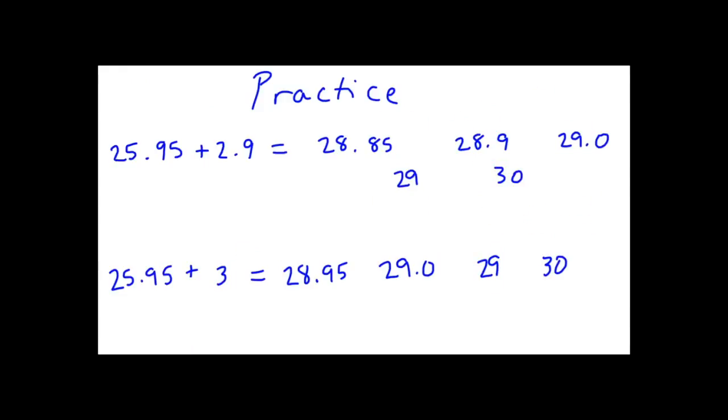Here are a couple of problems to practice your skills on the rules for addition and subtraction with significant figures. In this first example, we have 25.95 plus 2.9. 2.9 is your least precise measurement with one digit past the decimal. So your correct answer better only have one digit past the decimal.